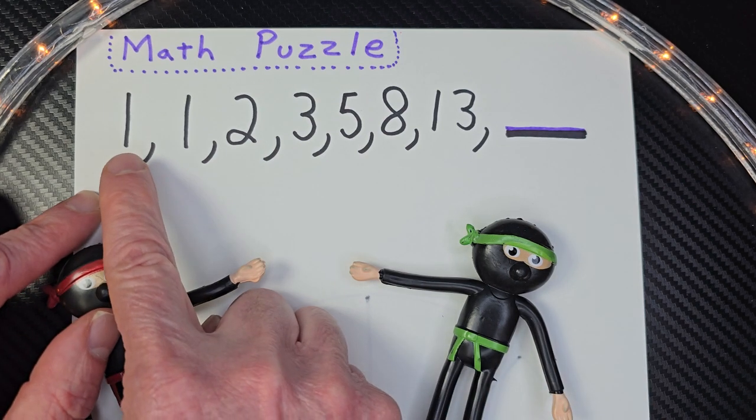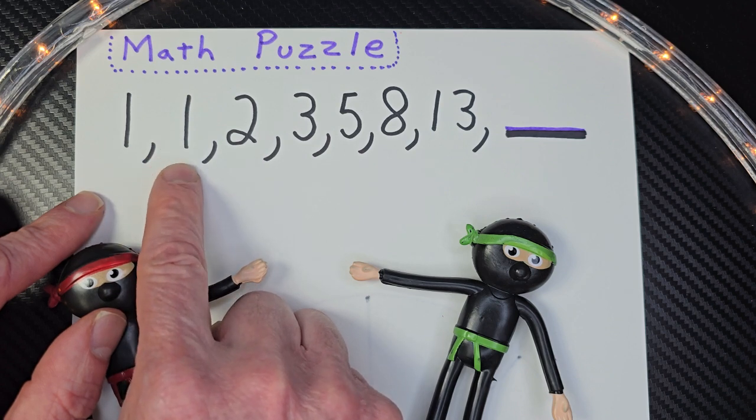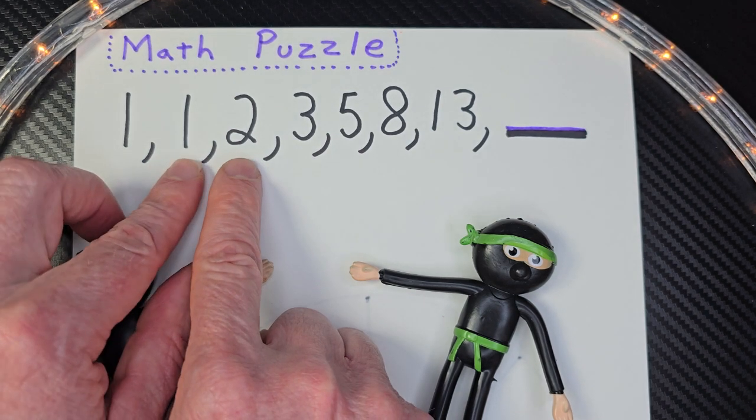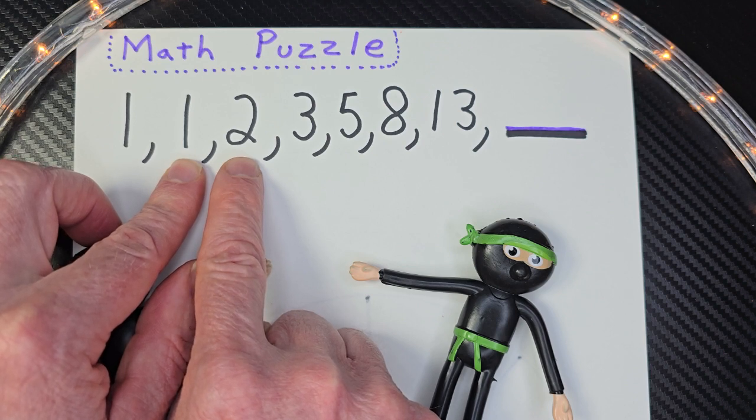Well, you take these two numbers right here, one plus one, and the sum of these numbers is two. So then you take these two numbers, add them together, and the sum of that is three.